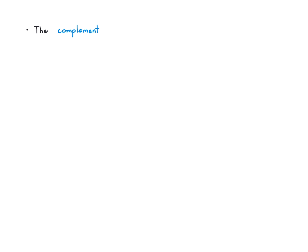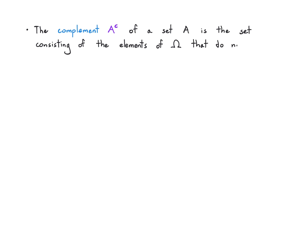Next is the complement. The complement of A is written as A superscript C, and that is the set that consists of all elements of the universal set that do not belong to A — so if they're not part of A, they're in the complement of A. In set builder notation, those are just the elements that do not belong to A.